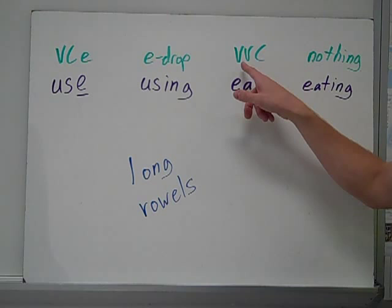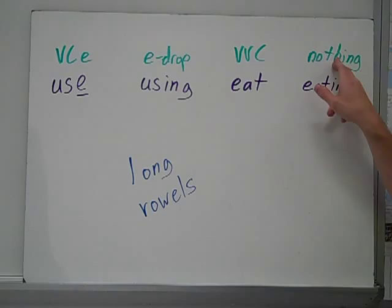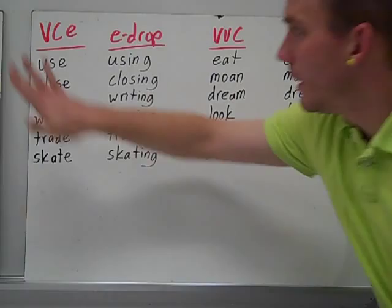But when you have two vowels in a row — like e, a, t and 'eat' — you just do nothing and then add -ing.